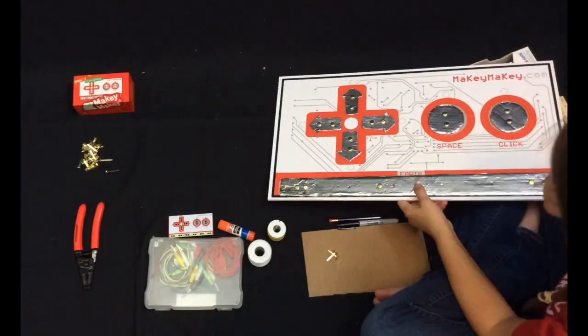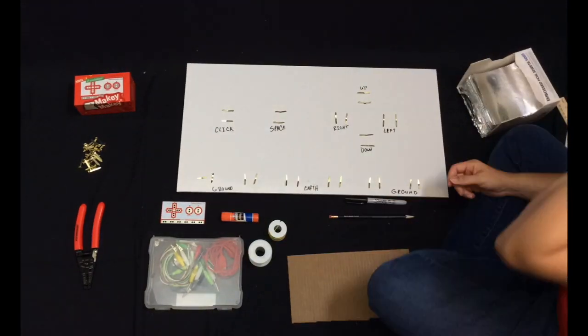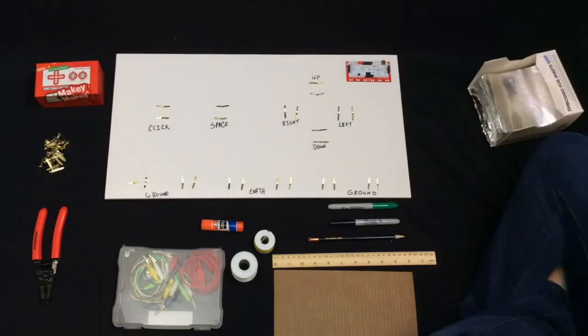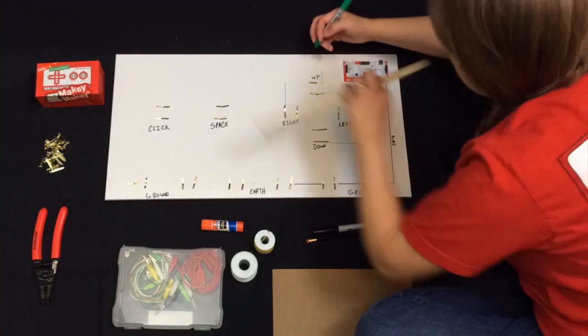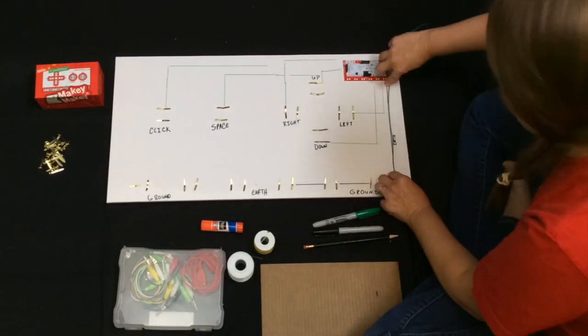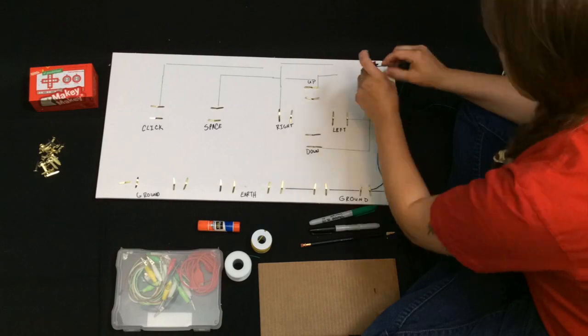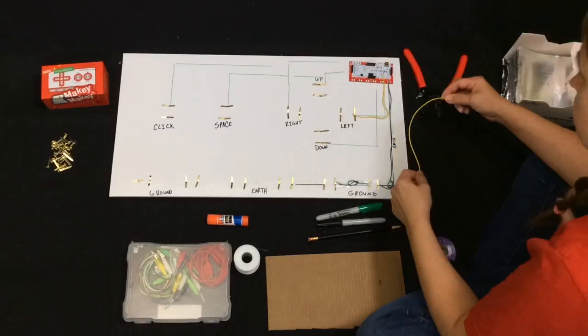Now that the giant Makey Makey looks like the front of a real Makey Makey, let's make the whole thing work just the same. Use a ruler to measure your circuit traces for each input or key press. Use that line you just drew to measure your hookup wire and start placing the wire from the brad to the matching key press on your Makey Makey.